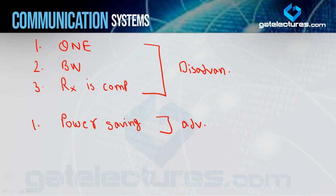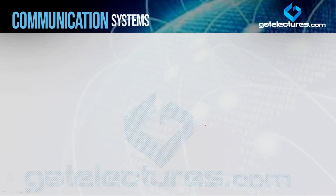Ab agar mein baat karun jo DSB-SC ki disadvantages hain — means jo improvements nahi ki DSB-FC se DSB-SC mein — woh hain: quadrature null effect, bandwidth, aur receiver complexity. Toh kya hum SSB-SC mein in cheezaon ko improve kar payenge? Yahi cheezein hum analyze karenge in case of SSB-SC — single sideband with suppressed carrier.